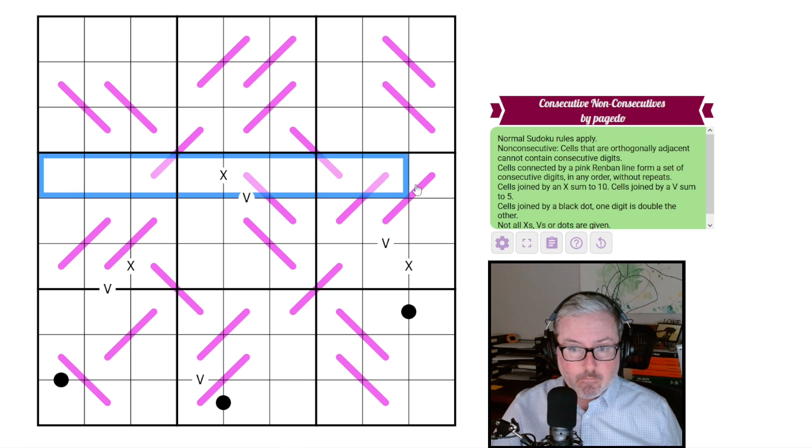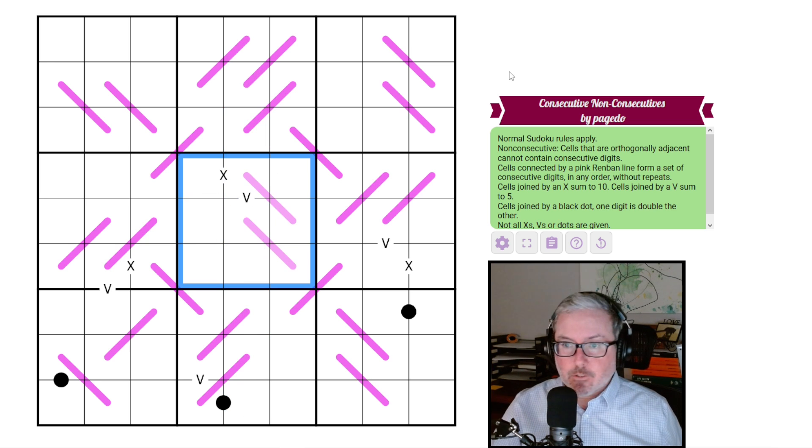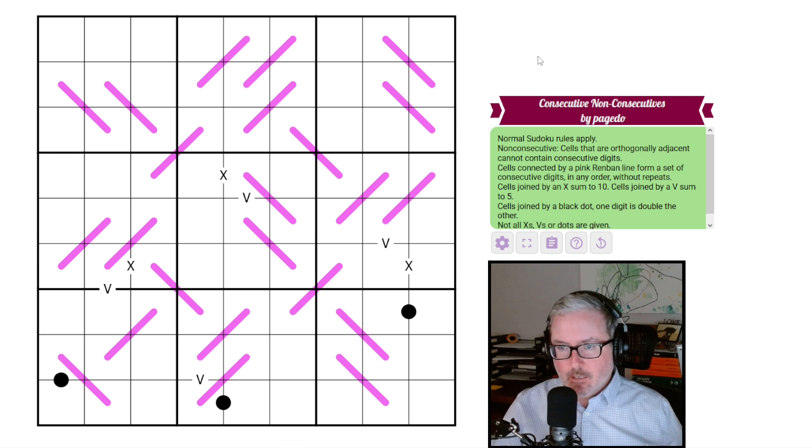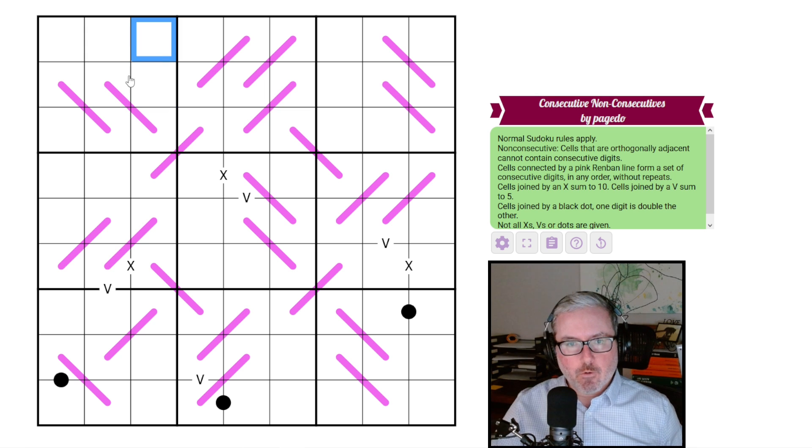So normal Sudoku, every row, column, and three-by-three box will contain the digits one through nine once each. Now, the non-consecutive portion here is cells that are orthogonally adjacent cannot contain consecutives. Okay, so this is like a global constraint. So if this was a one, you couldn't put a two in any of these positions because they would be consecutive and orthogonally connected, and that breaks the rule of that constraint.